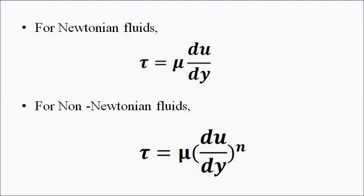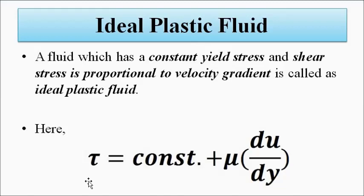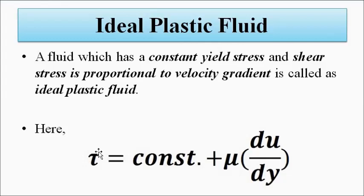Next is the ideal plastic fluid. The ideal plastic fluid is one which has a constant stress called yield stress acting on it, along with shear stress between the fluid layers that is proportional to the velocity gradient — meaning du/dy, the rate of change of velocity with respect to the separation distance. The stress formula for ideal plastic fluid is: tau = constant yield stress + mu × (du/dy). If we remove the constant yield stress, it becomes a Newtonian fluid.